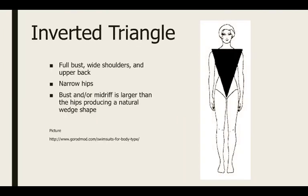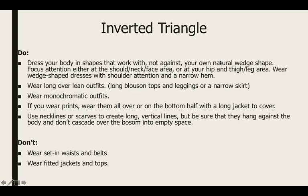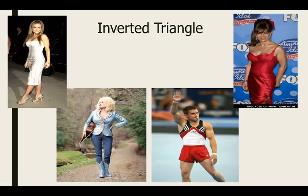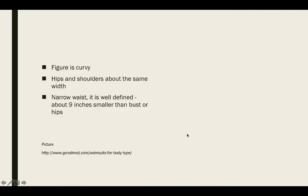Inverted triangle, here we go. We've got full bust, wide shoulders, and upper back is also very, very wide. You've typically got narrow hips to create this upside-down wedge shape. And your bust or your midriff is typically larger than the hips that produce that natural wedge. And when I say larger, I'm not saying outward. I'm saying measurement this way, in that direction. You're going horizontal, not like a belly. All right, again, follow the rules if you want to change your shape. But we've got a good way to tell is always to look here, and then you can really see that.